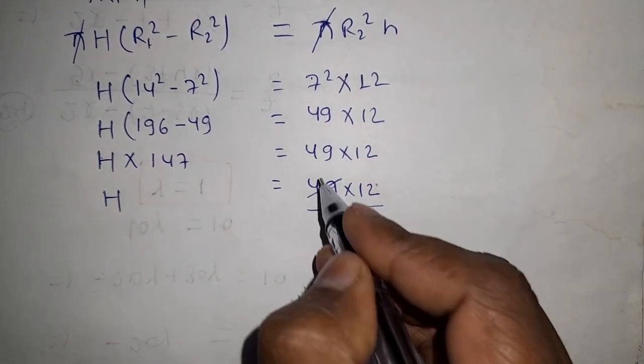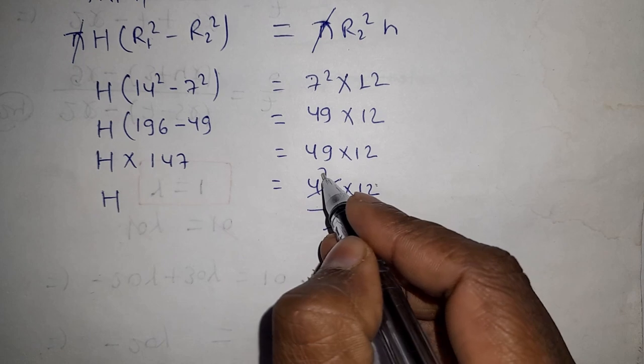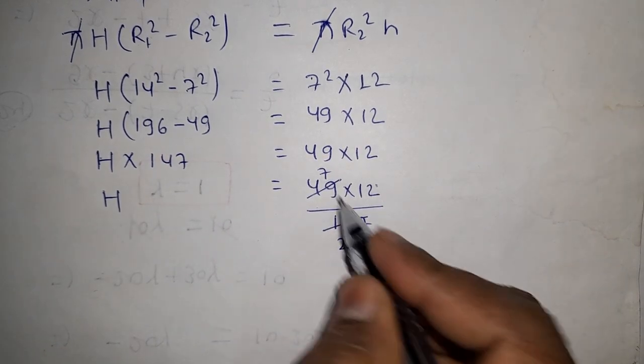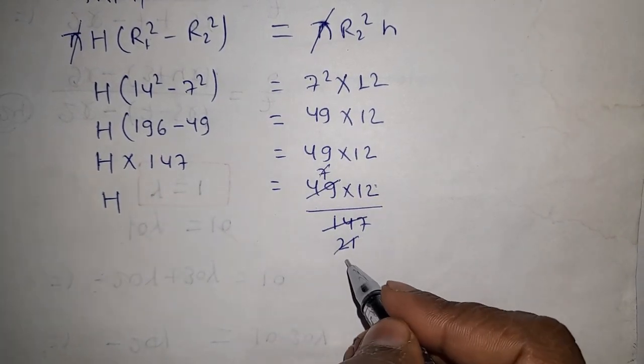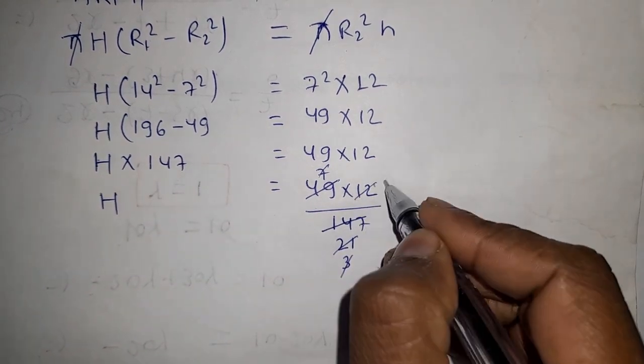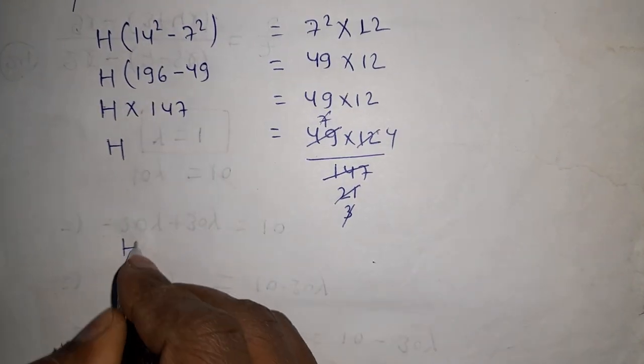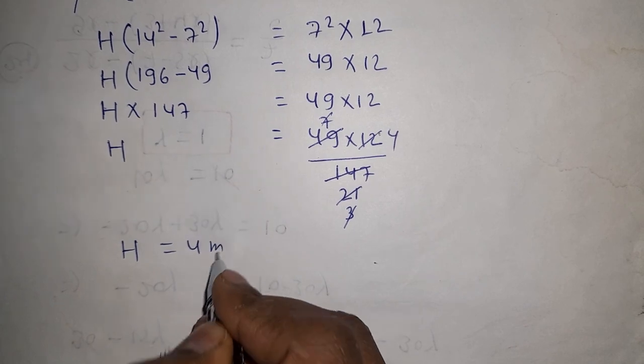Now 147 divided by 49 is 3, and 49 divided by 49 is 1. So 3 times 12 divided by 3 is 4. That means H equals 4 meters.